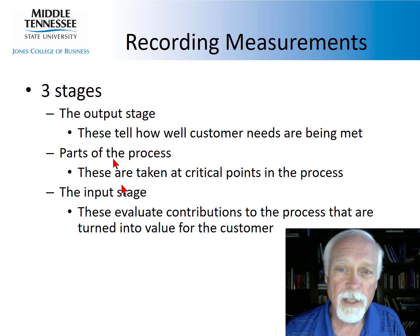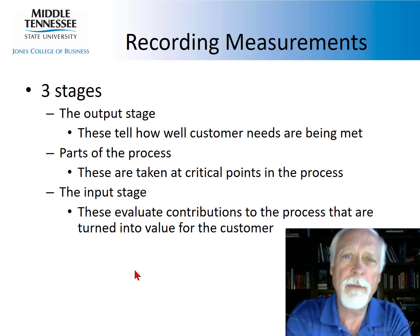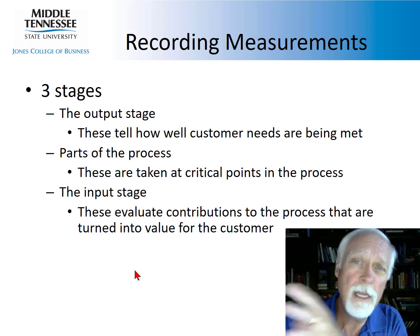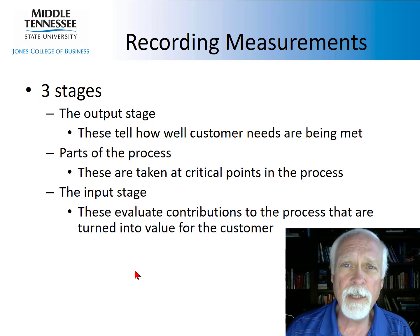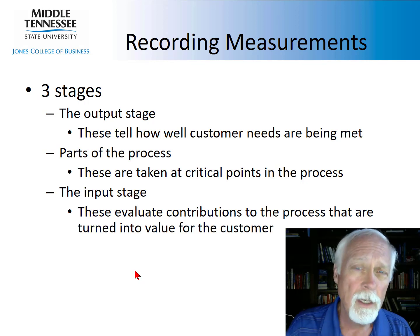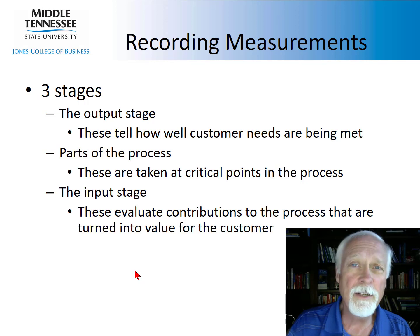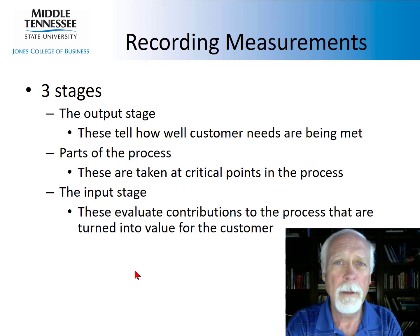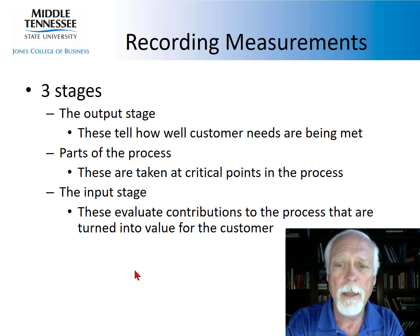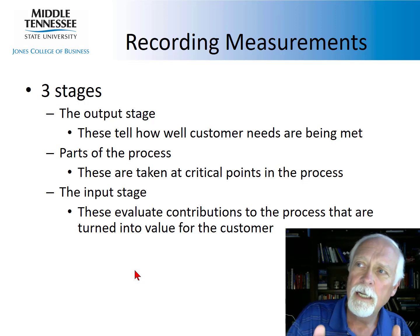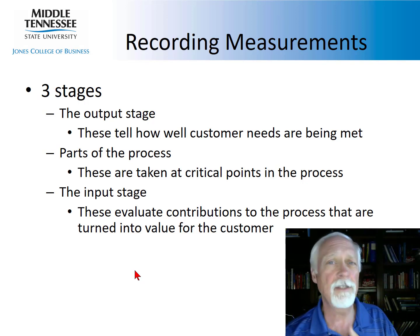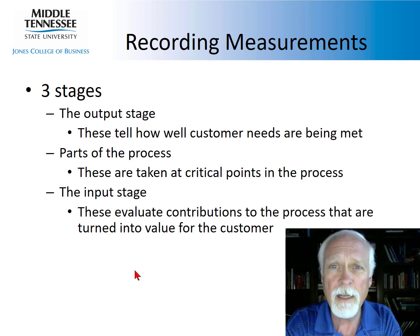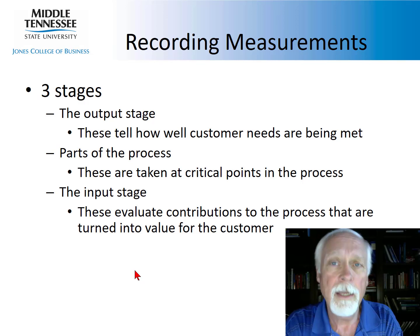We can measure at different stages: the output stage, parts of the process, or the input stage. For example, if I'm looking at my health and trying to achieve good health, one output measure might be weight. But if I'm not doing something to achieve that, it probably won't happen. There's a process of exercise that needs to happen — I can measure how many reps I do, how many miles I travel on my bicycle, and the intensity of that exercise. Then on the input side: calories in.